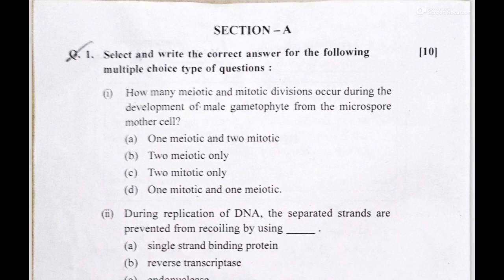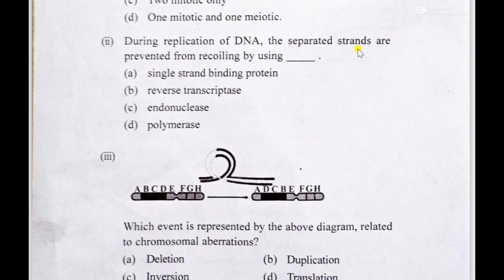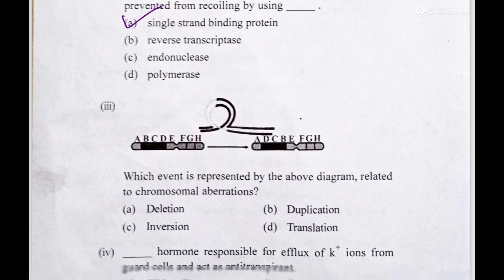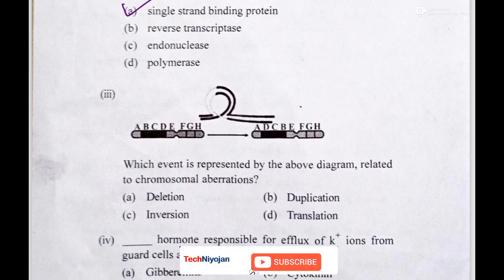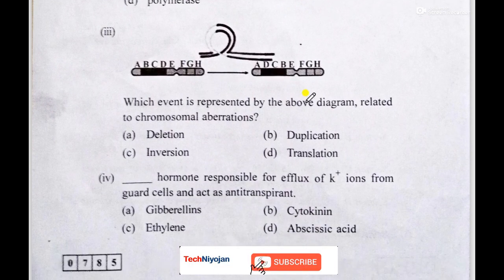Its answer is option A. The second MCQ: during replication of DNA, the separated strands are prevented from recoiling by single strand binding protein. The third MCQ: as per the diagram, which event is represented related to chromosome aberrations?